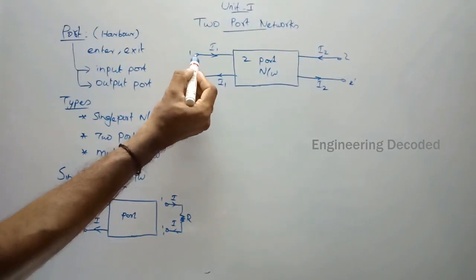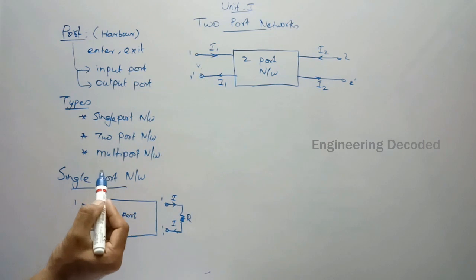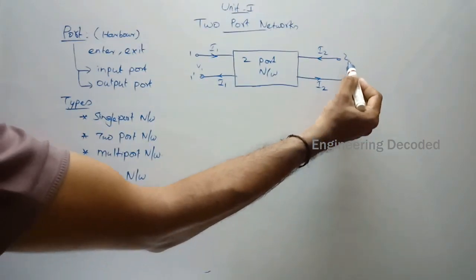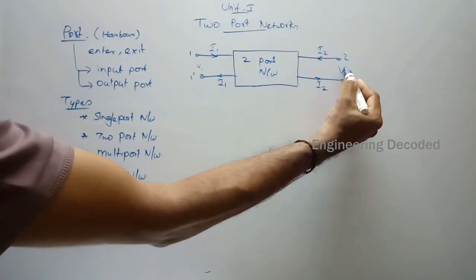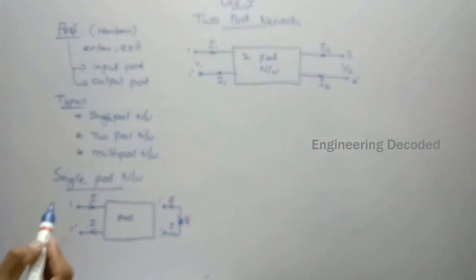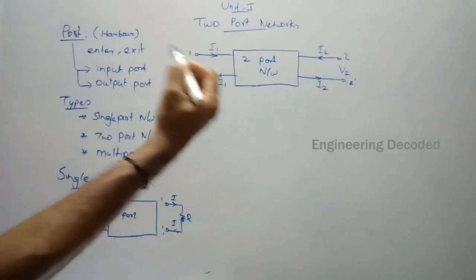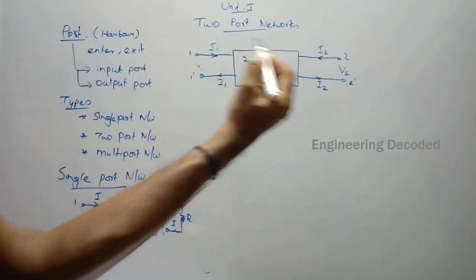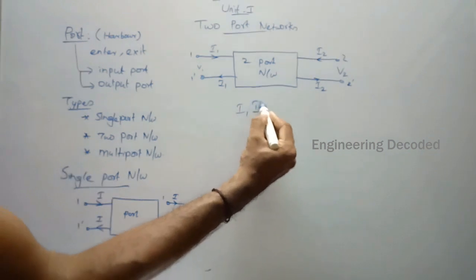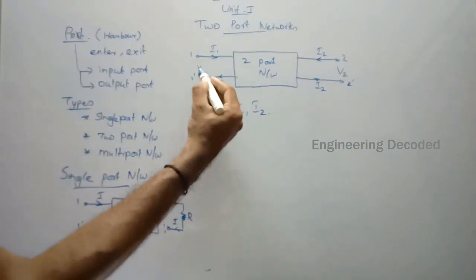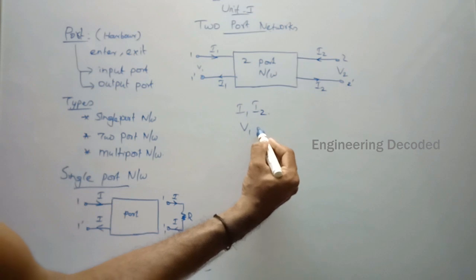The potential difference between the two points 1 and 1-dash is named as V1. Similarly, the potential difference between the two points 2 and 2-dash is named as V2. So if you see this two-port network, you can find four parameters: two currents I1 and I2, and two voltages V1 and V2.